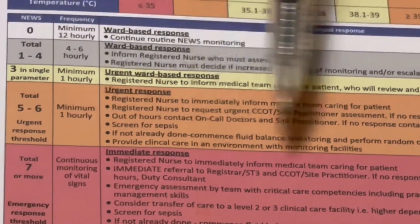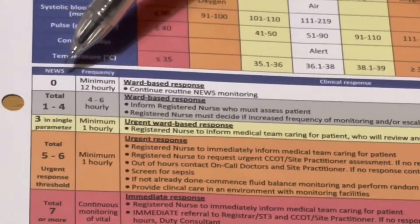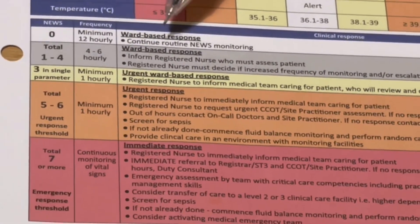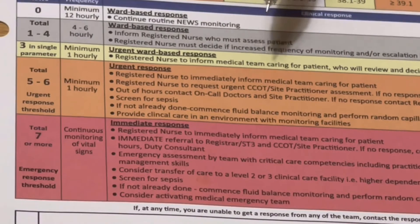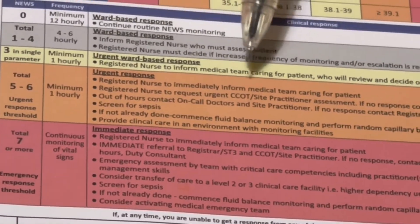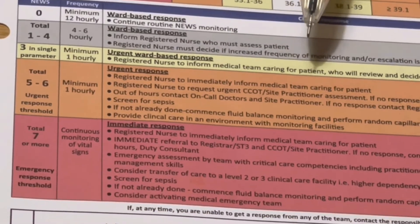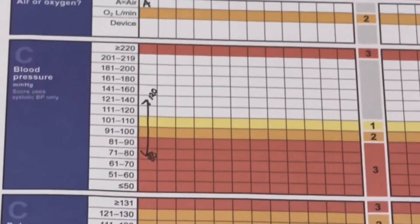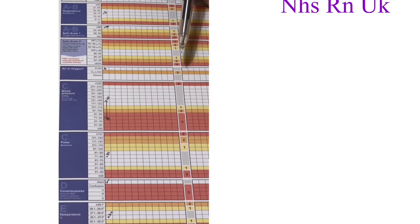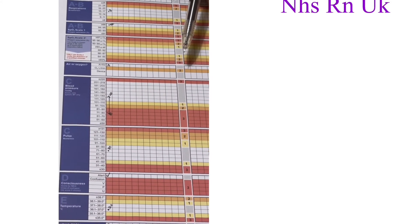So that explains how we monitor according to the NEWS score, the frequency, and the clinical implications for each score level. This is what is called the National Early Warning Score 2. This is very important for your exam as well as for your daily clinical nursing practice.